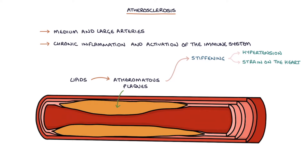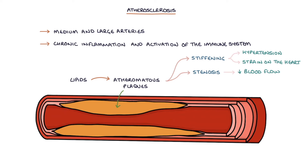The plaques also cause stenosis, leading to reduced blood flow, for example in angina. And they can lead to plaque rupture, resulting in a thrombus that can block a distal vessel and cause ischemia, for example in acute coronary syndrome.